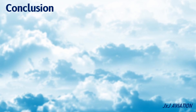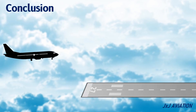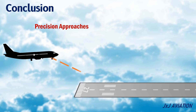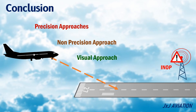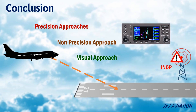Normally, Precision Approaches are preferred because they provide both lateral and vertical guidance to the aircraft. These approaches require a ground-based system to provide the signals required for the approach. In places where ground-based equipment is not available or cannot be installed, a Non-Precision Approach or a Visual Approach can be used. In a Non-Precision Approach, approach charts are used to maintain the correct heading and descent angle. A Visual Approach can be performed only if there is good weather, good visibility, and less traffic.